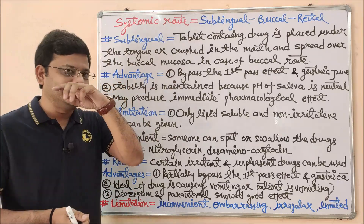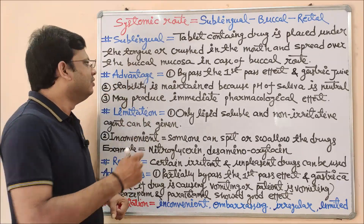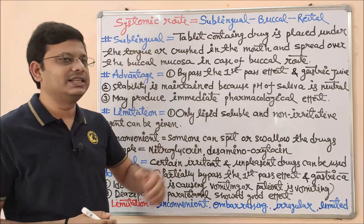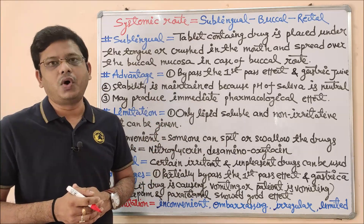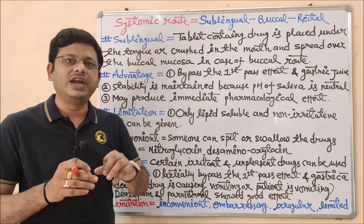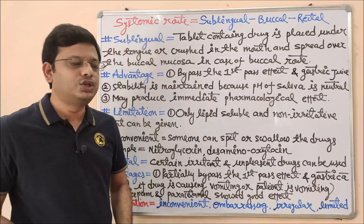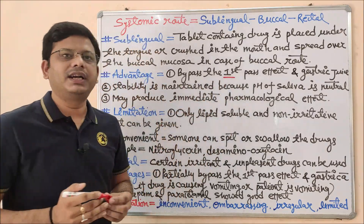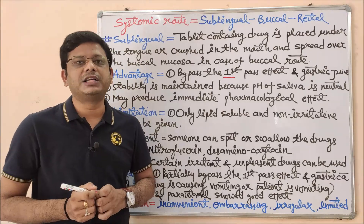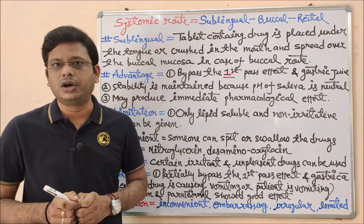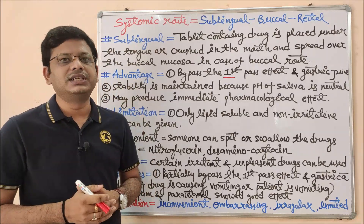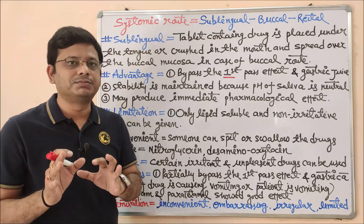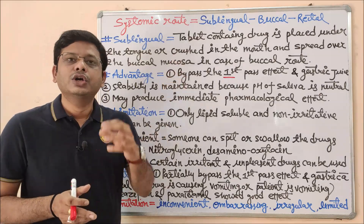Now coming to their basic advantages. First of all, they bypass the first pass effect and gastric juice. This is one of the most important advantages, and we will revisit this in upcoming lectures. To understand this, we need to understand first pass metabolism in short — this applies to oral route, not to sublingual and buccal.